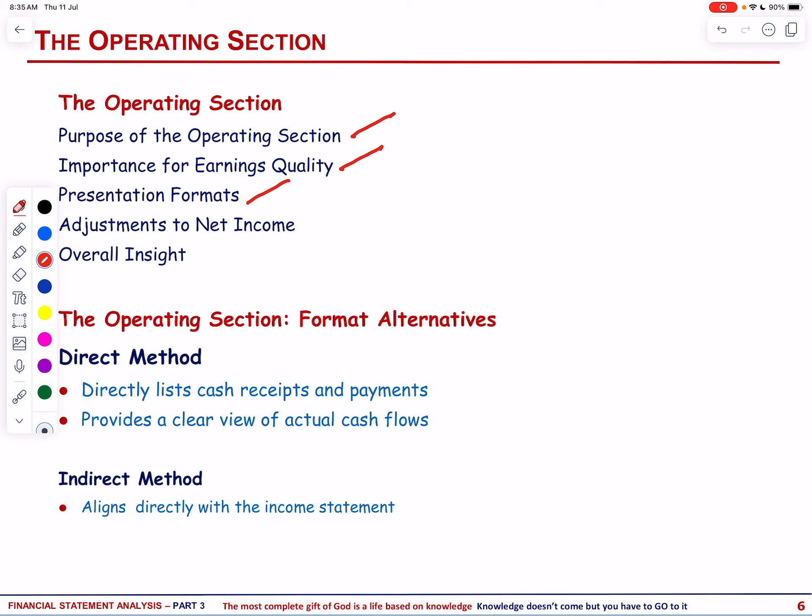The operating section adds back non-cash expenses like depreciation, subtracts gains and adds losses from non-operational activities, and adjusts for changes in working capital items like accounts receivable and accounts payable. It provides critical insight into the company's core activities and clarifies how reported profits translate into actual cash movements, supporting effective financial analysis and decision making.